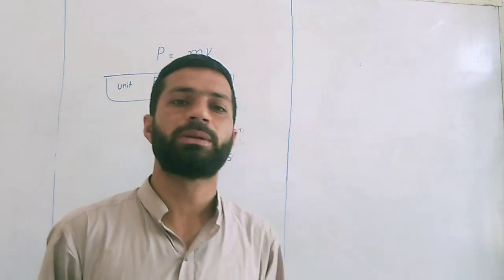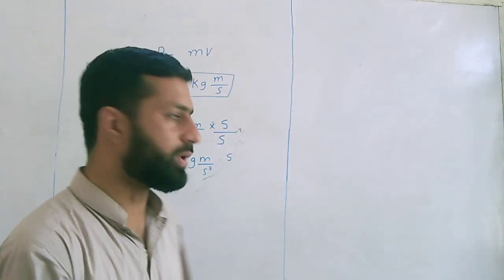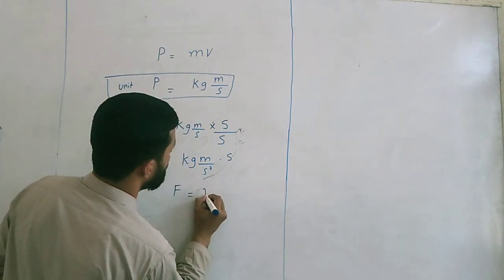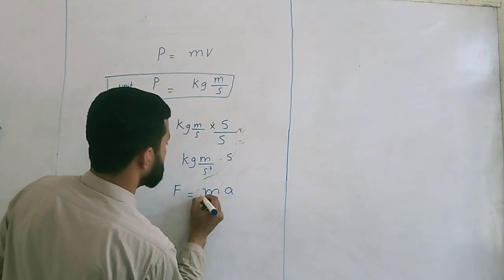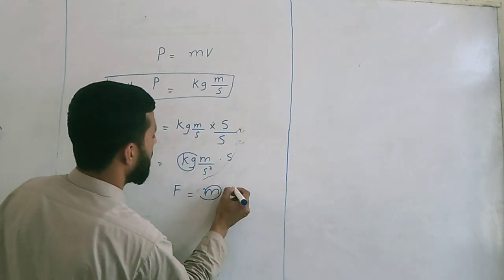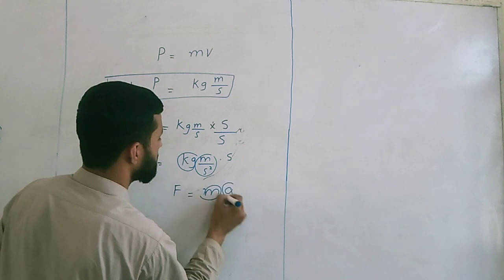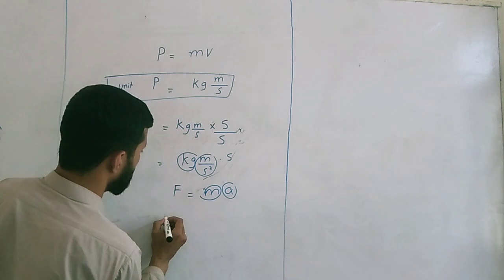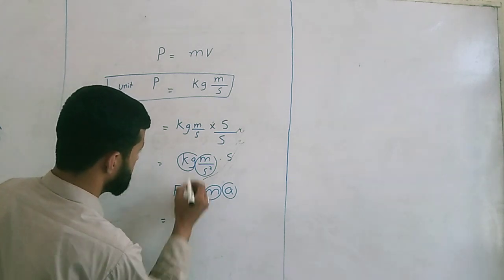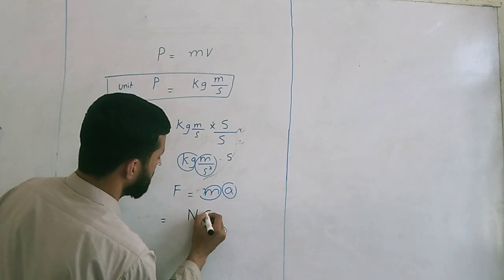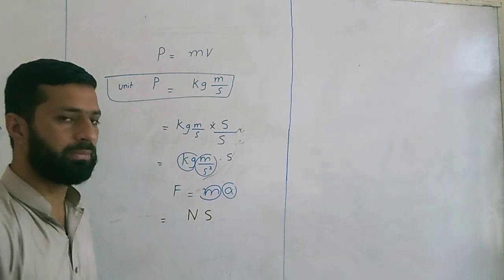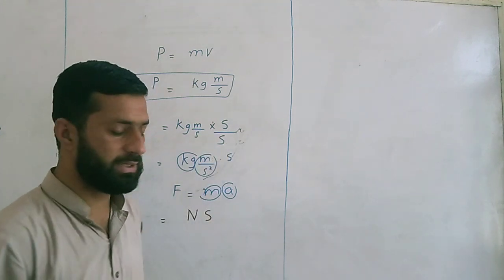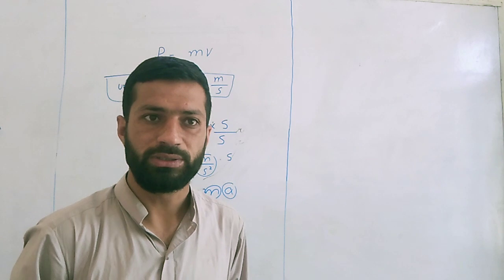One kilogram meter per second squared is equal to Newton, because we know from the equation F is equal to MA. Mass has the unit of kilogram, and meter per second squared is the unit of acceleration. So this kilogram meter per second squared becomes Newton, and the remaining factor is second. So we can express this: kilogram meter per second is equal to Newton second.